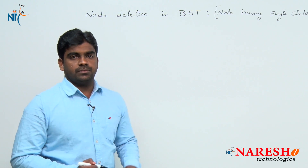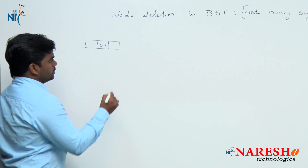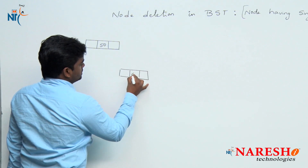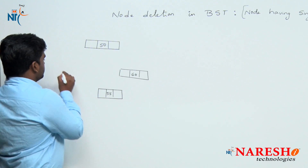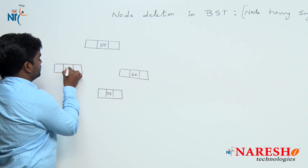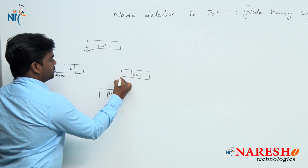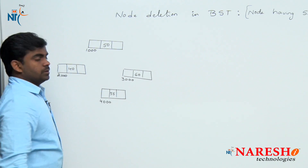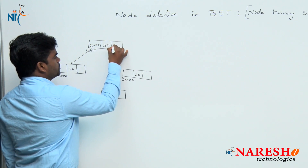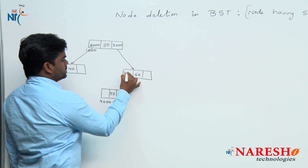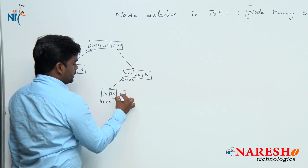First I will draw diagrams. This is node 50, this is node 60, this is node 55, and this is node 40. Address 1000, 2000, 3000, 4000. Here 2000 is connected here, next one 3000 connected here, next 4000 connected here as left child with no right child. Here it is no right child, no left child, no right child.